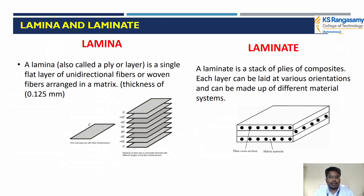Lamina and laminate. A lamina is also called as a ply or layer. It is a single flat layer of unidirectional fiber or woven fiber arranged in a matrix. The thickness of the lamina is 0.125 mm. This single layer is called a lamina.